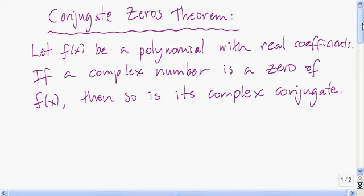In this video we're going to talk about complex zeros of a polynomial and factoring when we have complex zeros. Let's start with the conjugate zeros theorem. If f of x is a polynomial with real coefficients, and if some complex number is a zero of f of x, then so is its complex conjugate.